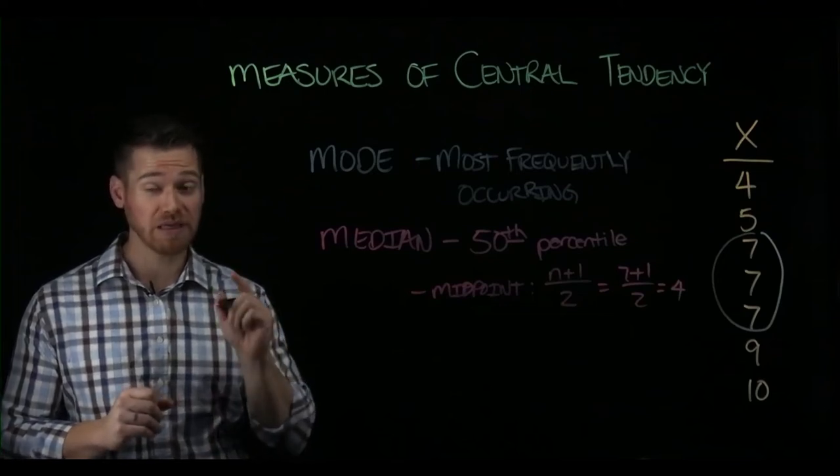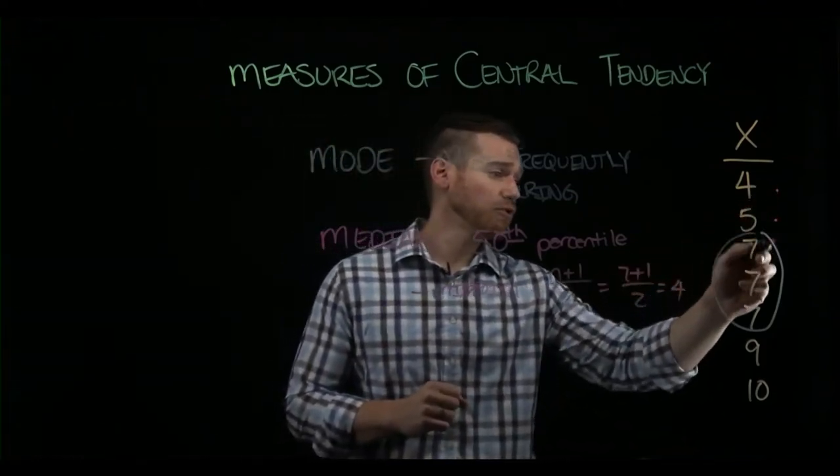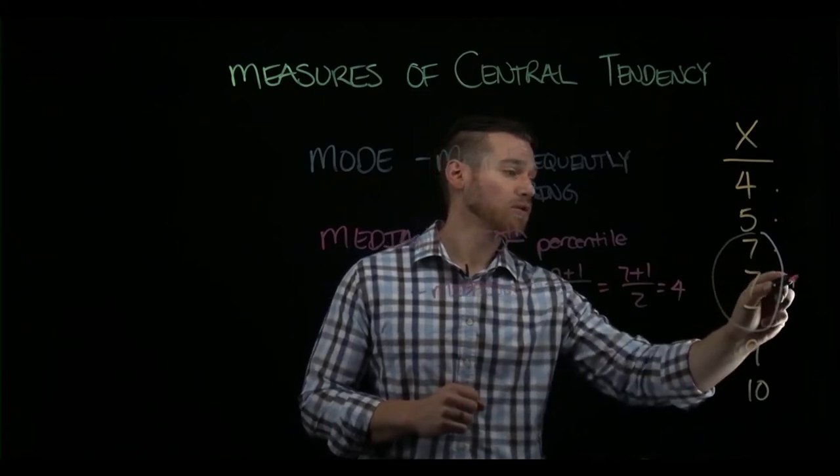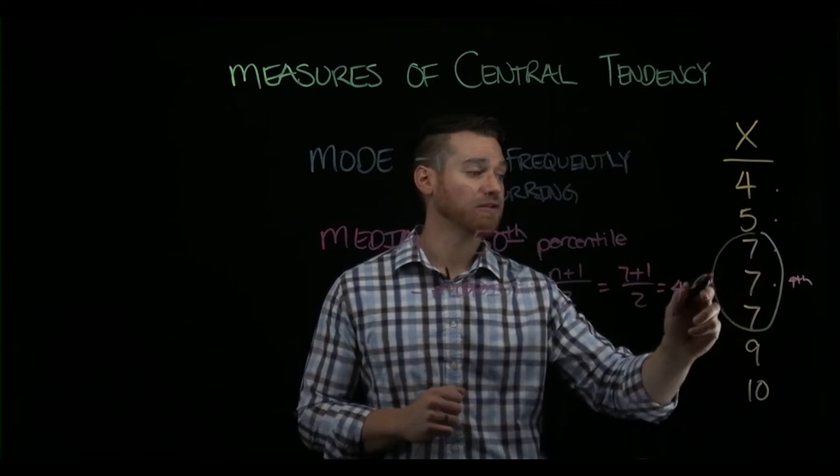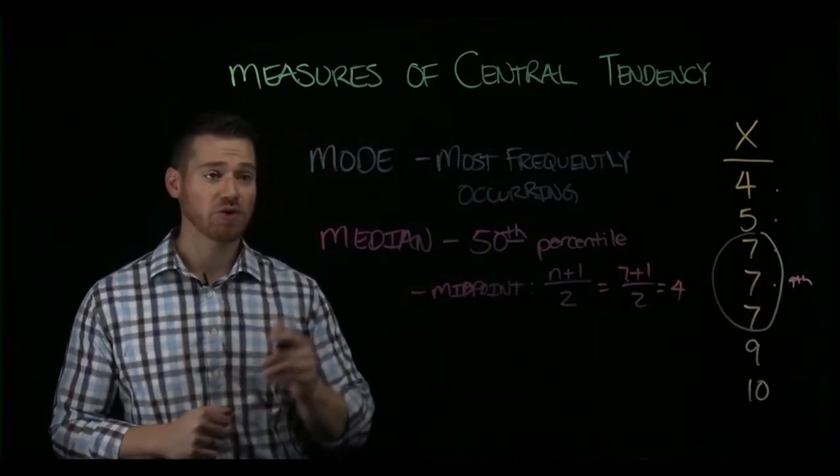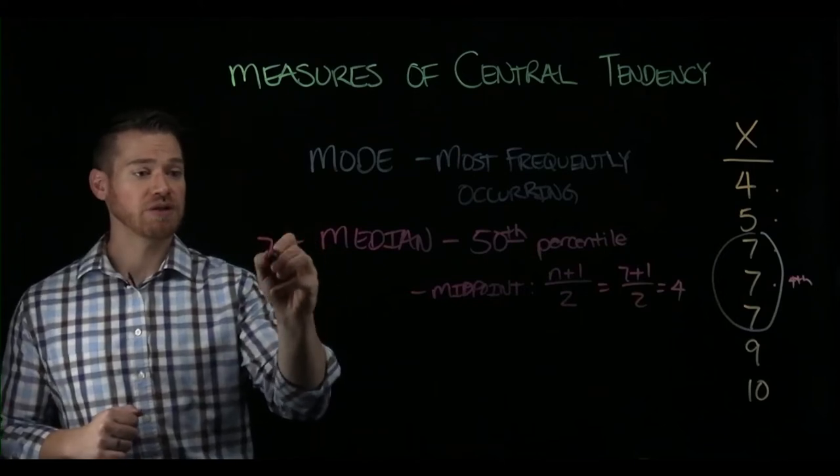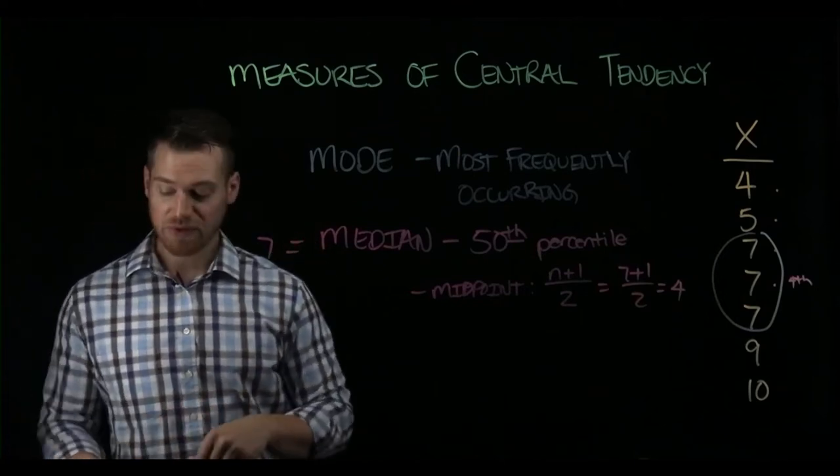So we would find the fourth score. When these scores are put in order from smallest to largest, they must be in order because the median cares about location. So we go one, two, three, four. This is the fourth score. We look for what the value of the score is—it's a seven. So in this case, our median is seven. So right now in this distribution, we have the median is seven and we also have that the mode is seven.